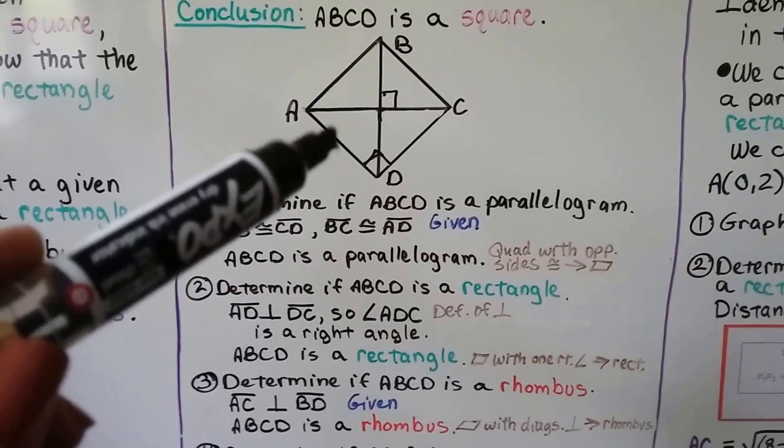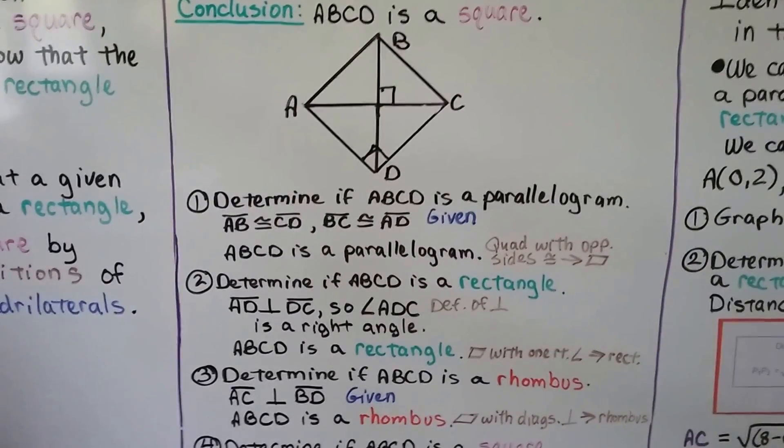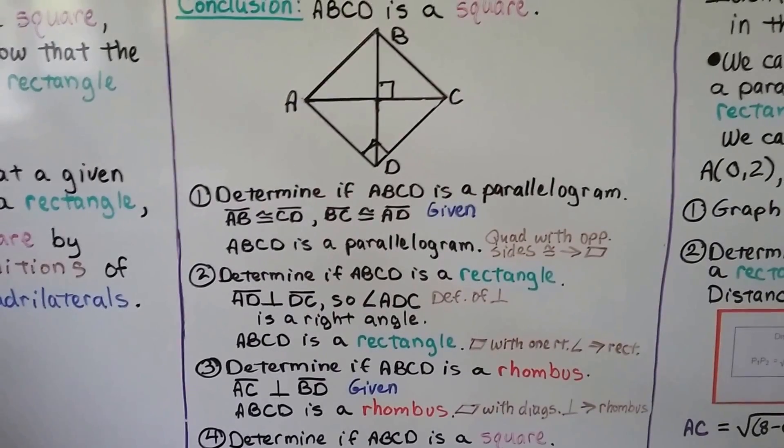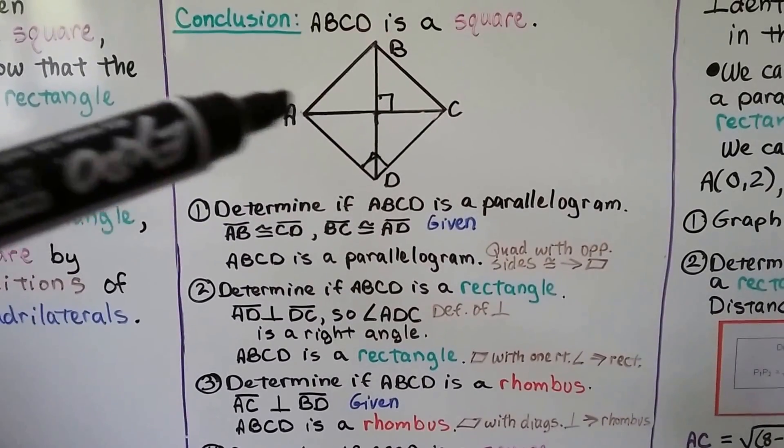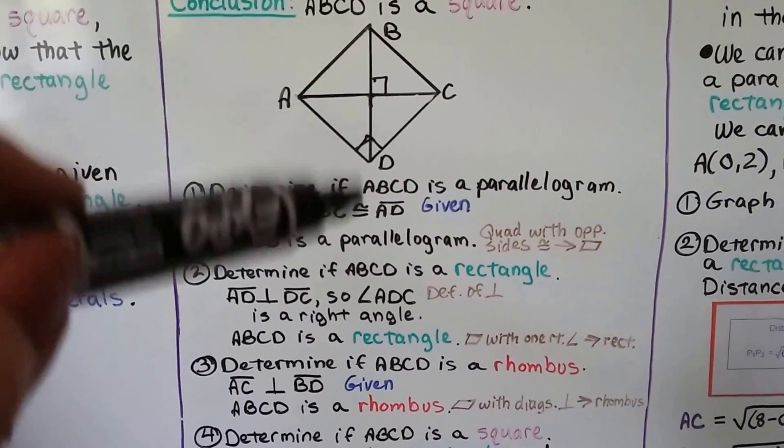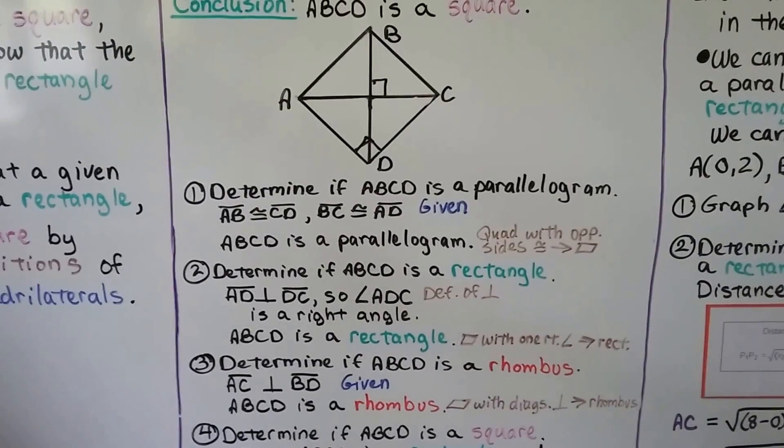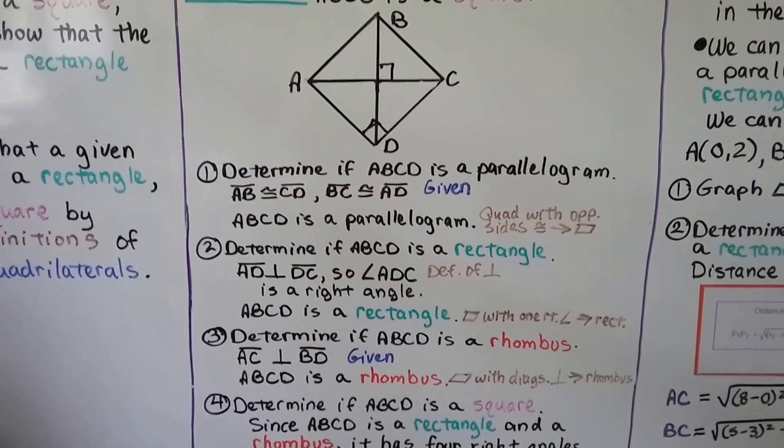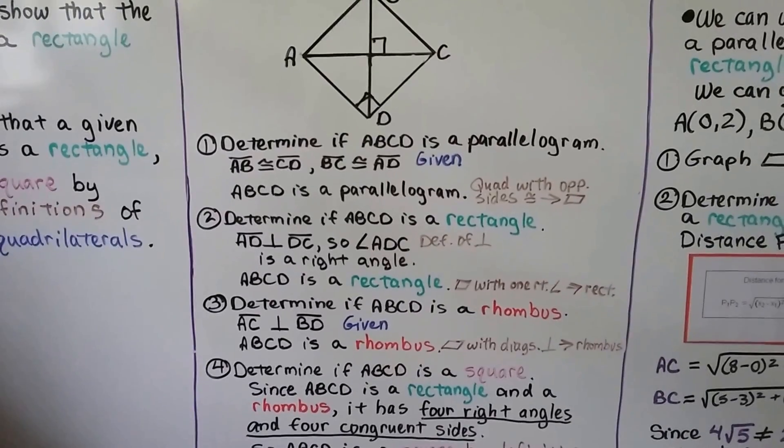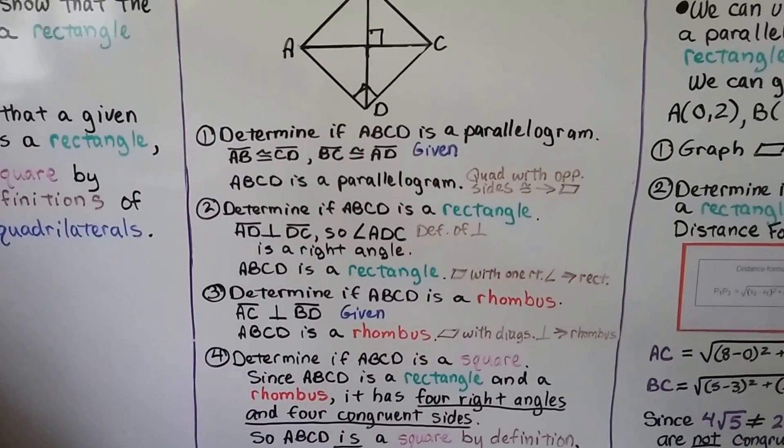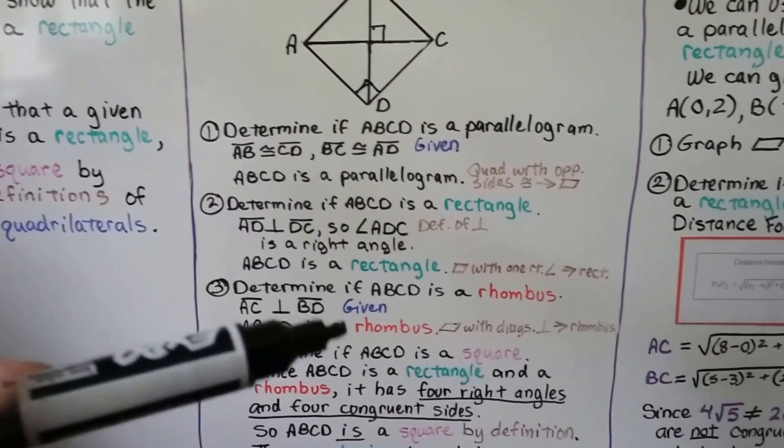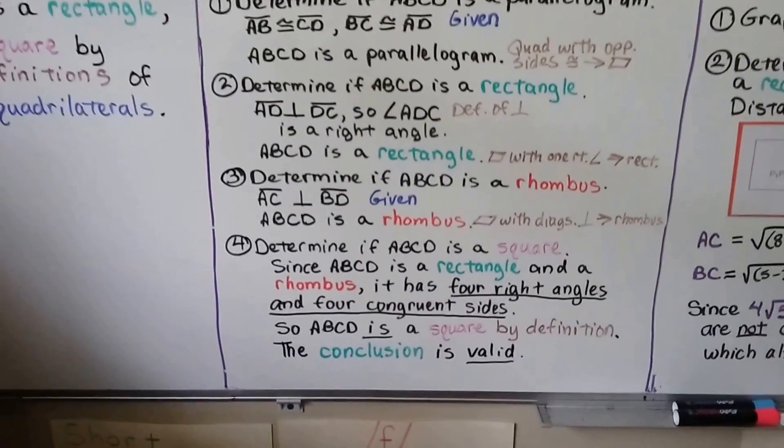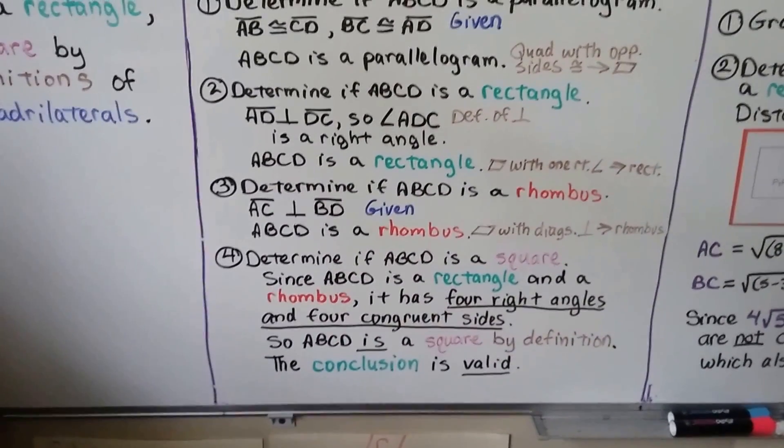And ABCD is a rectangle because parallelograms with one right angle are rectangles. Now we determine if ABCD is a rhombus. It's given that AC is perpendicular to BD. So ABCD is a rhombus because parallelograms with diagonals that are perpendicular are rhombuses. Now the fourth thing we do is determine if ABCD is a square. Since ABCD is a rectangle and a rhombus, it has four right angles and four congruent sides. ABCD is a square by definition. So our conclusion is valid.